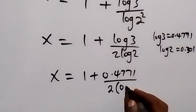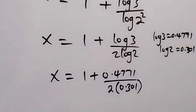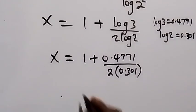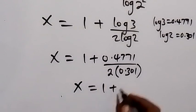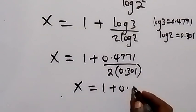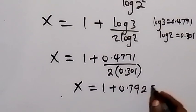And when we simplify here we have x to be equal to 1 plus 0.7925. So when we multiply, we have 0.602.